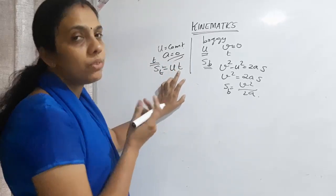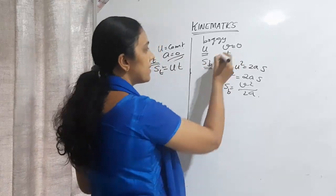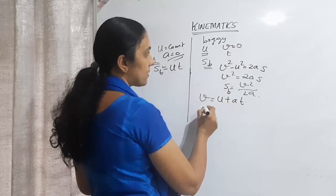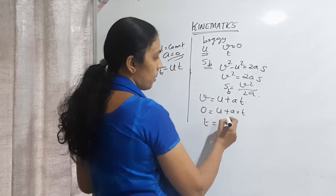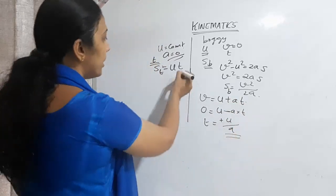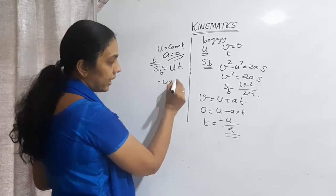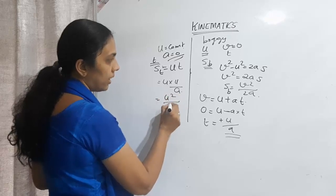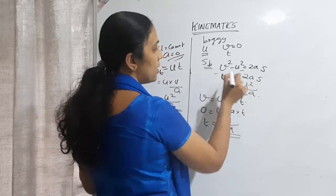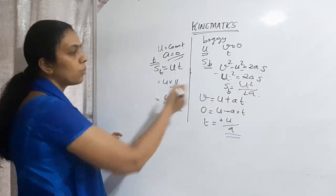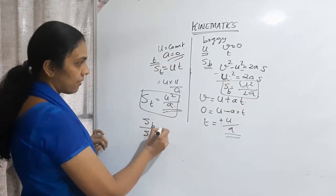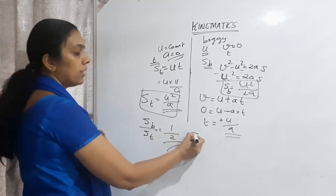We need the time t — how long it takes the boggy to stop. Using v = u + at with v = 0 and retardation: t = u/a. In that time, the train covers u × (u/a) = u²/a. The boggy covers u²/2a. So (distance of boggy) / (distance of train) = (u²/2a) / (u²/a) = 1/2. The boggy's distance is half of the train's distance.